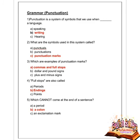We now move to punctuation. First question: punctuation is a system of symbols that we use when doing what with a language? Options are speaking, writing, and hearing. Option B is correct — writing. Next question: what are the symbols used in this system called? Options are punctuals, punctuation, and punctuation marks. Option C is correct — punctuation marks.